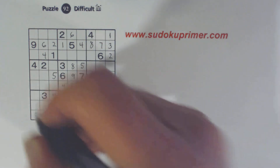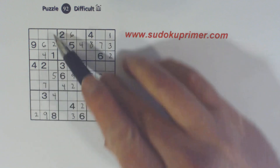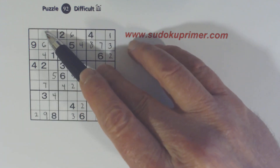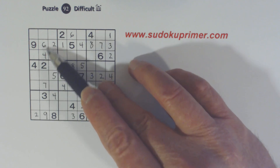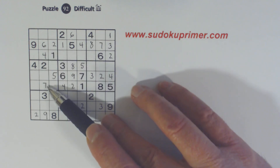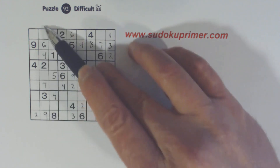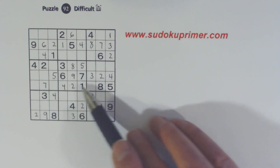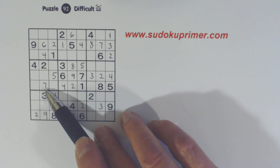We got a 7 right here. How did we place the 7 there? Let's look at this column — we've got 1, 5, 7, 8 left in this column, and here's a 1, 5, and an 8, so we know that's a 7.